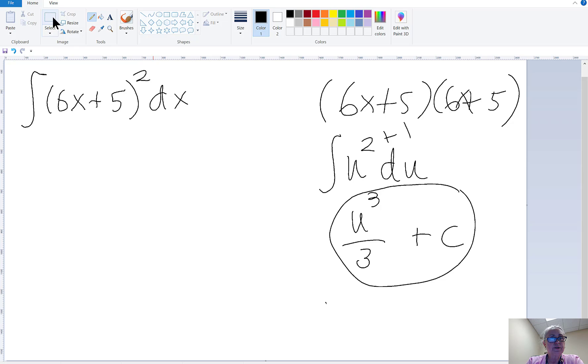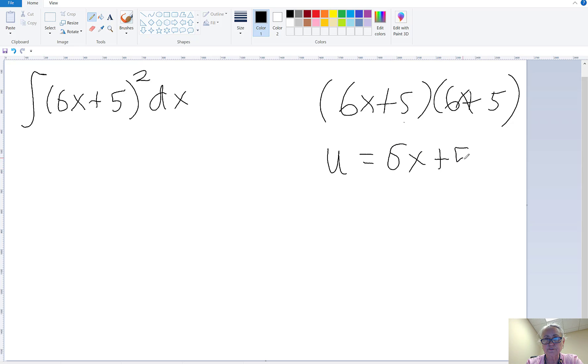So what I'm going to do is make this easier by using u-substitution. So u is going to be the inside of the function, 6x + 5. That means if I take the derivative of this with respect to the x variable, and that's very important, the derivative of a function named u with respect to x, it's going to be 6.